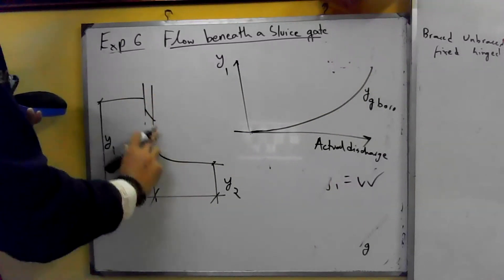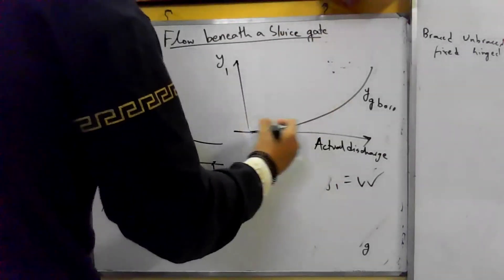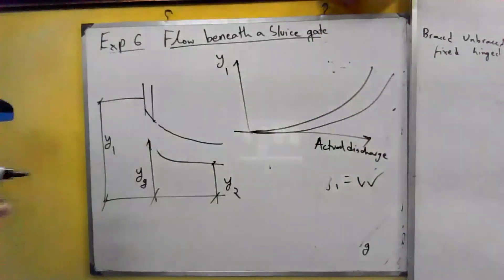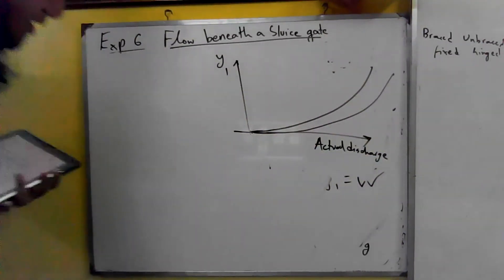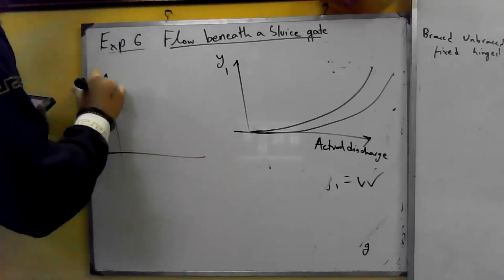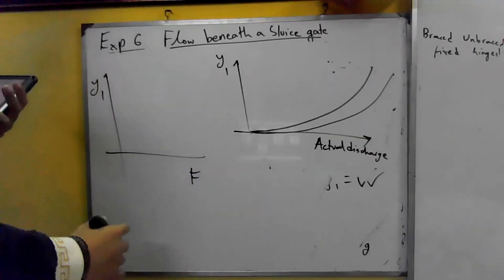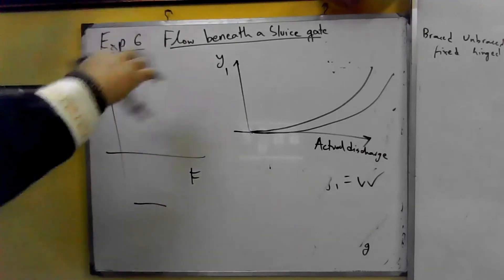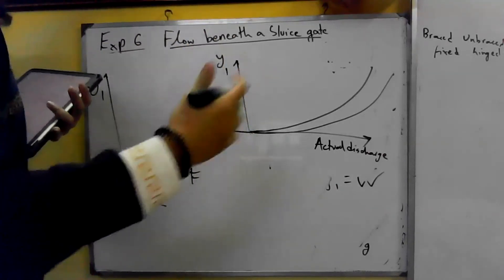For the same values of Y1, we change the gates. When you take a bigger gate opening, discharge increases — that is the relationship. In the last graph, the upstream depth Y1 is on one axis, you have the force on the gate, and you have the hydrostatic force. They are almost hydrostatic.